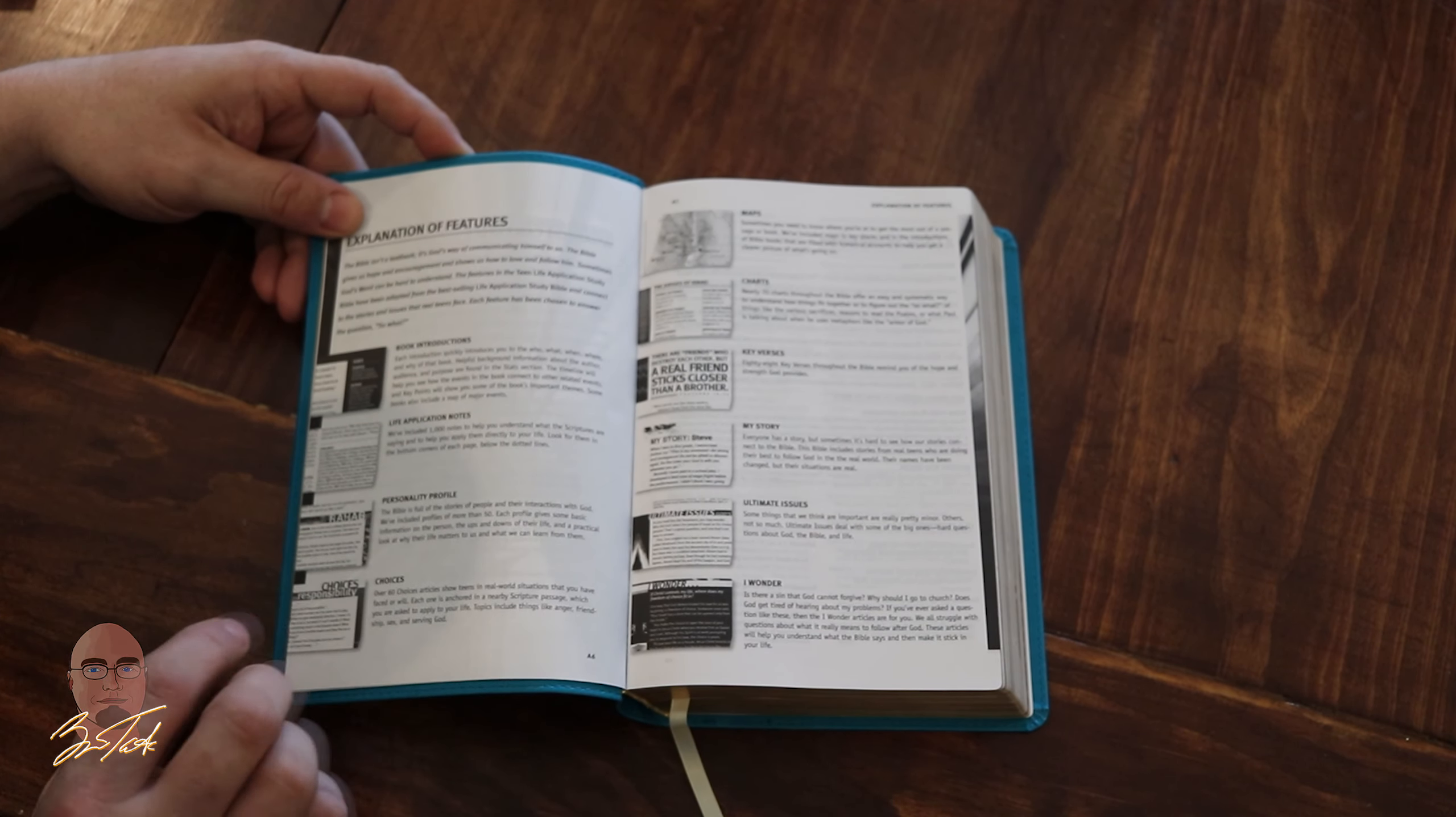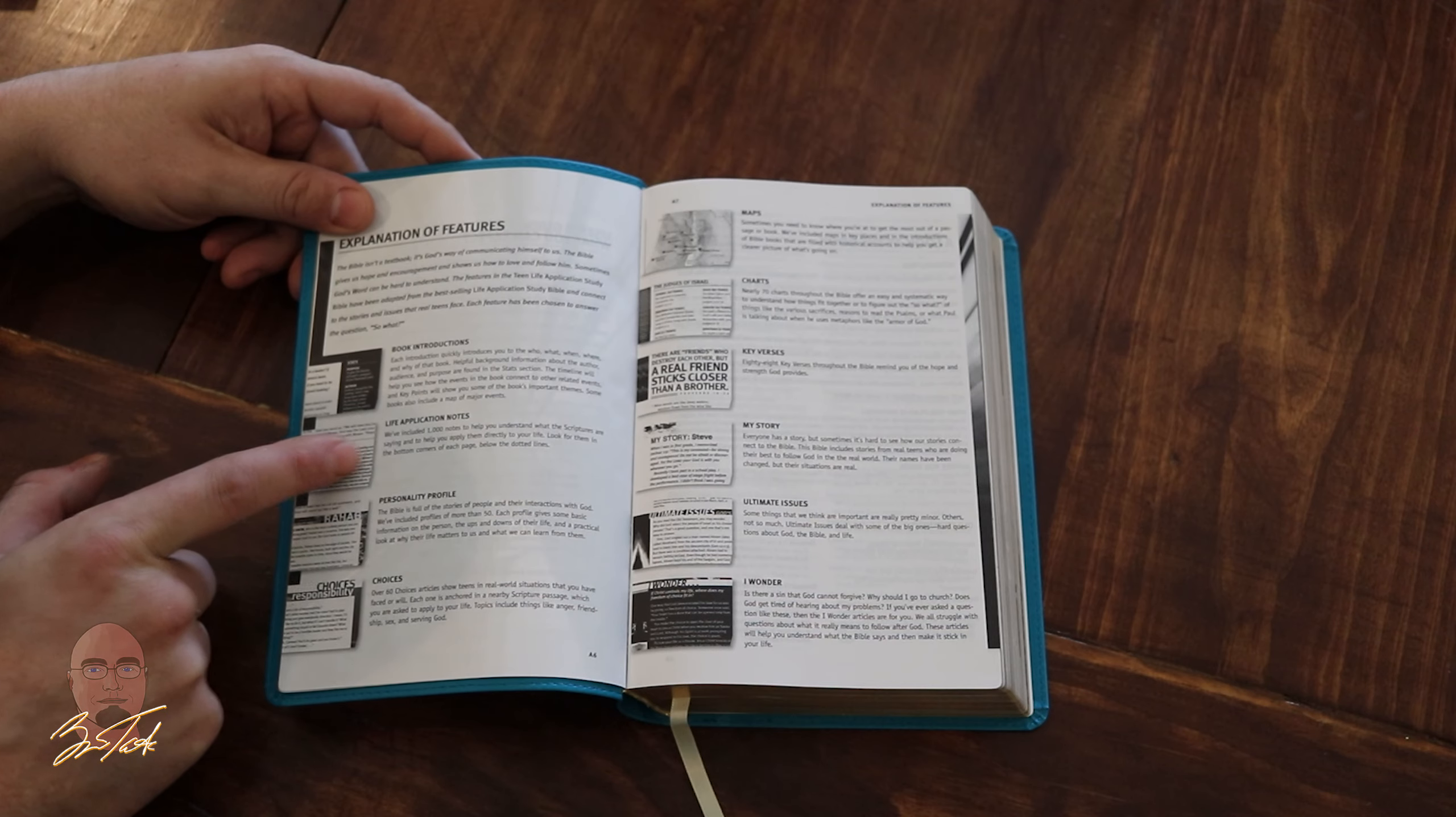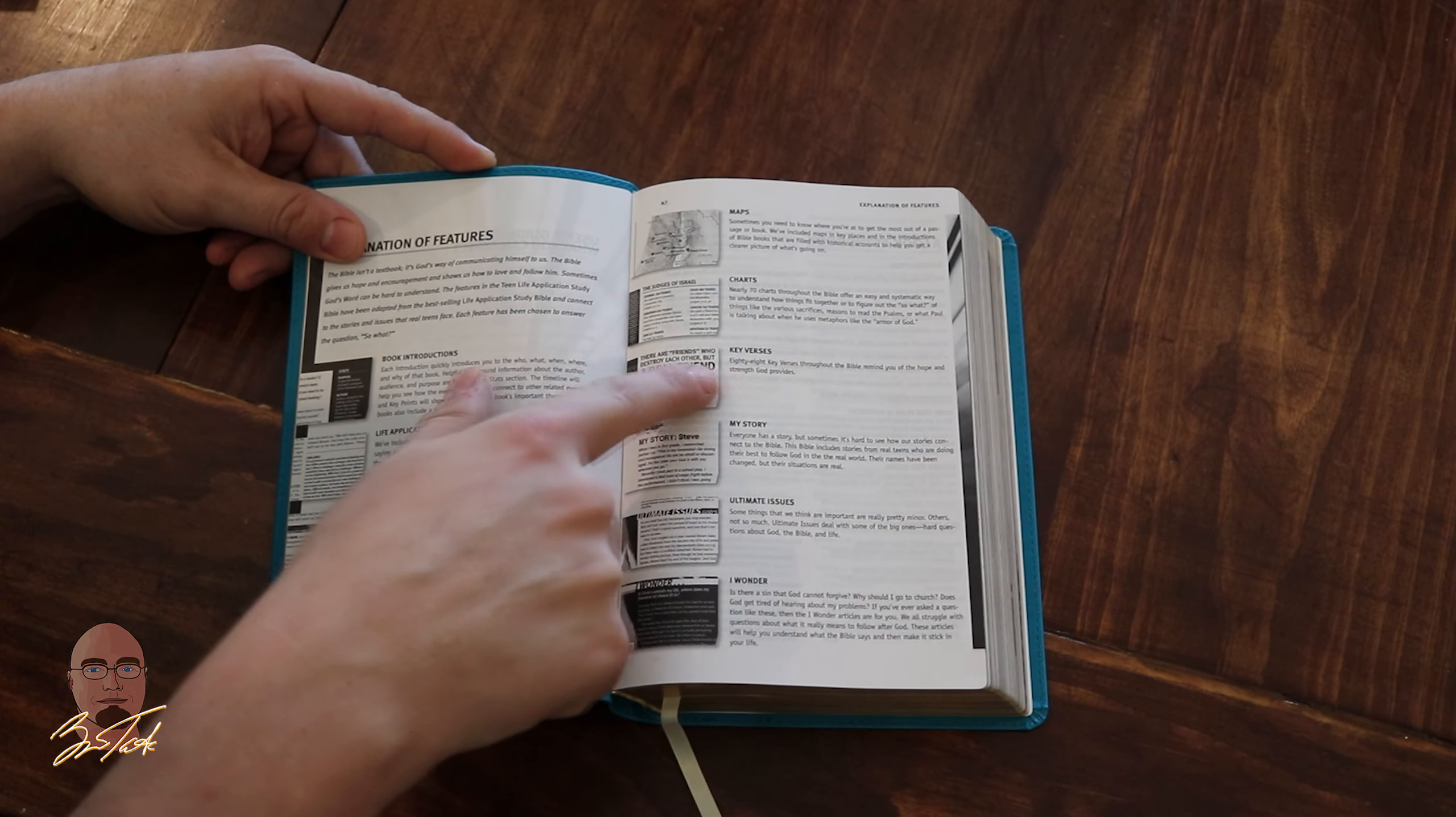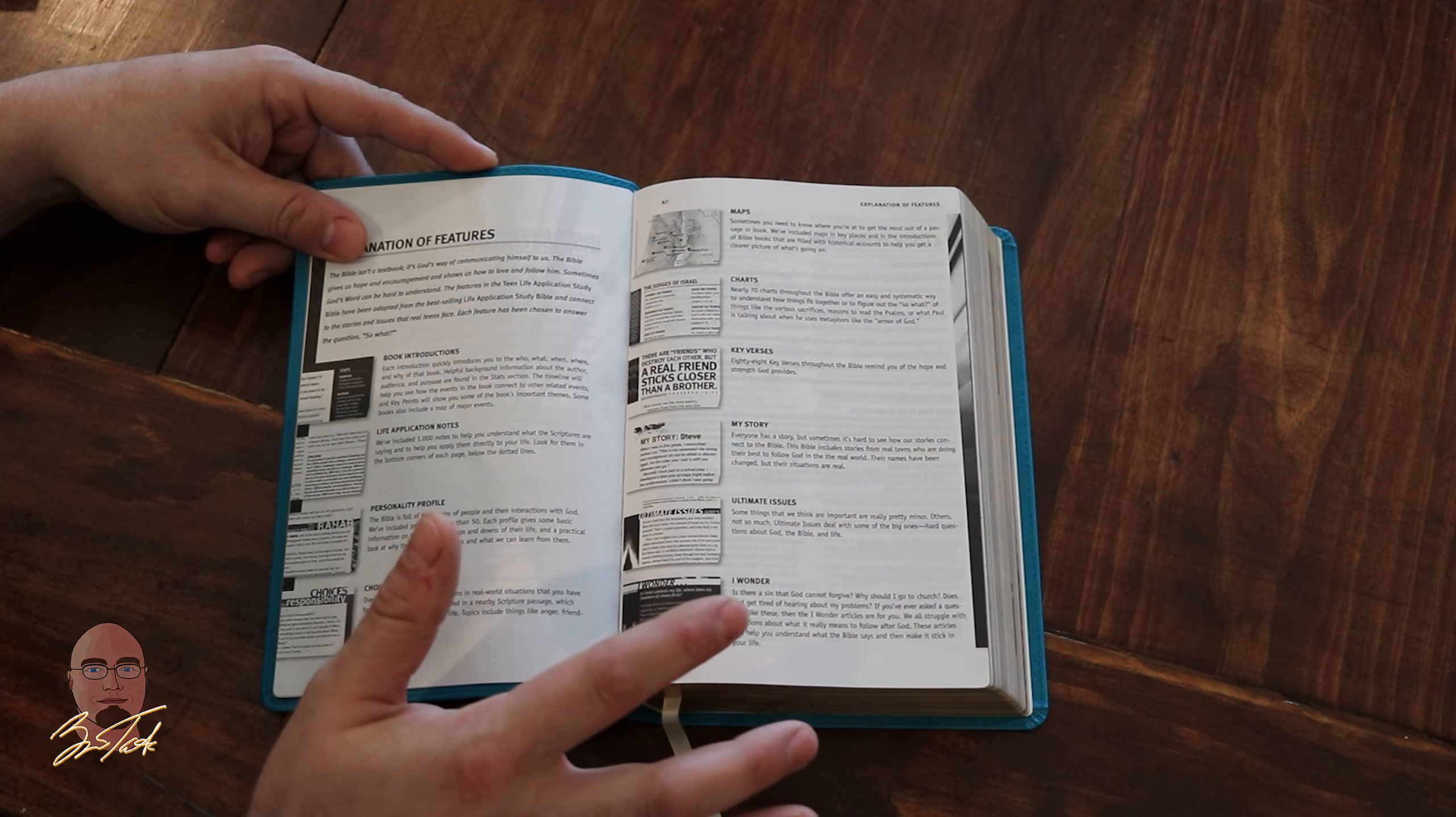The user's guide explains the features. Instead of traditional notes like you'd find in a normal Life Application Study Bible, you have these features: book introductions, Life Application notes, personality profiles, choices, maps, charts, key verses which are really cool, my stories, key ultimate issues, helping you divide rightly what is worthy of concern or attention, and I wonders and key questions.